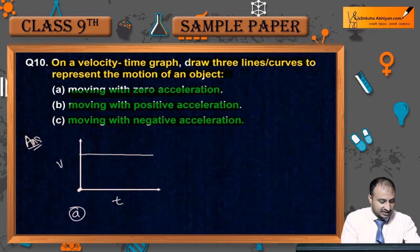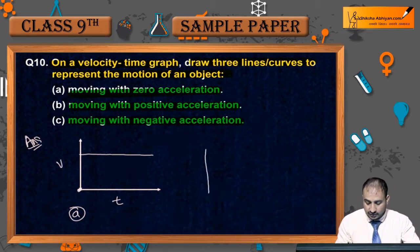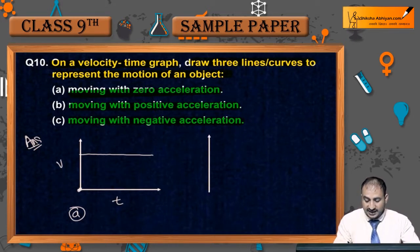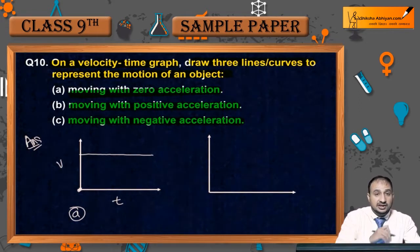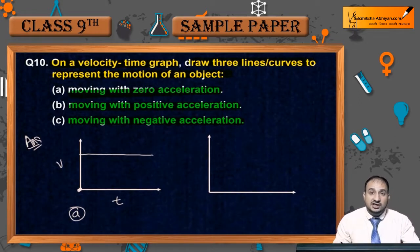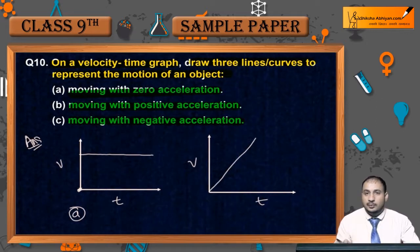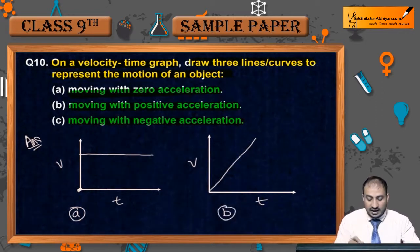अब B के case की बात करें तो जब positive acceleration हो रहा हो, तो positive acceleration के लिए slope भी positive होगा। तो V और T का graph कुछ इस तरह का बनेगा — यह positive acceleration के लिए velocity-time graph हो गया।